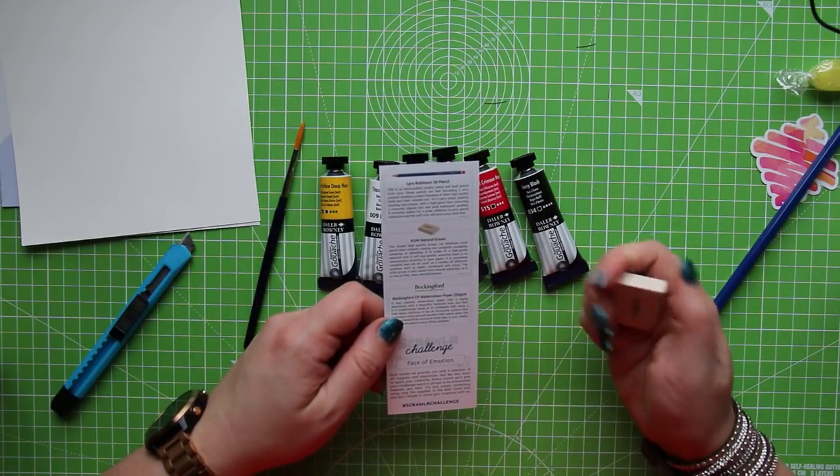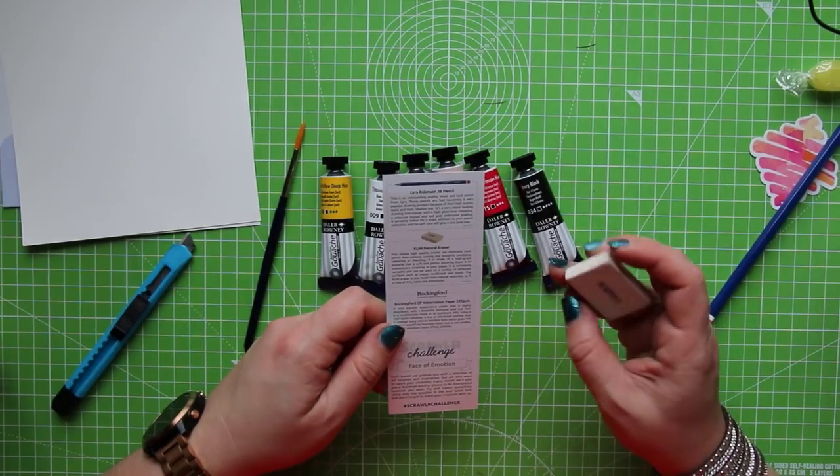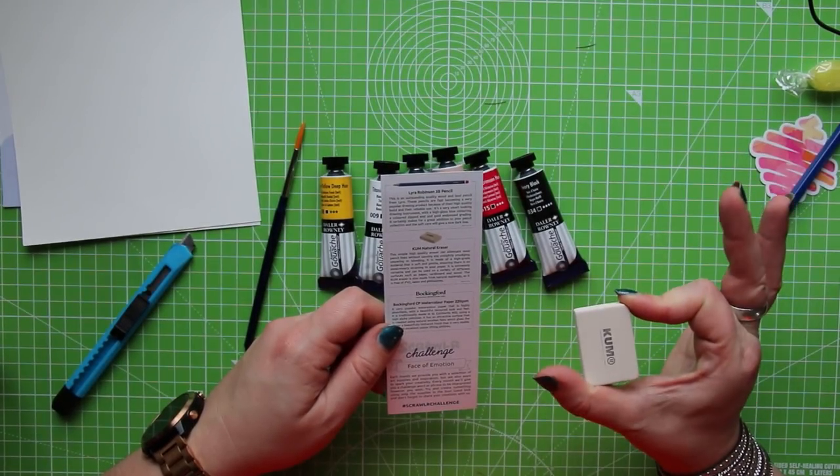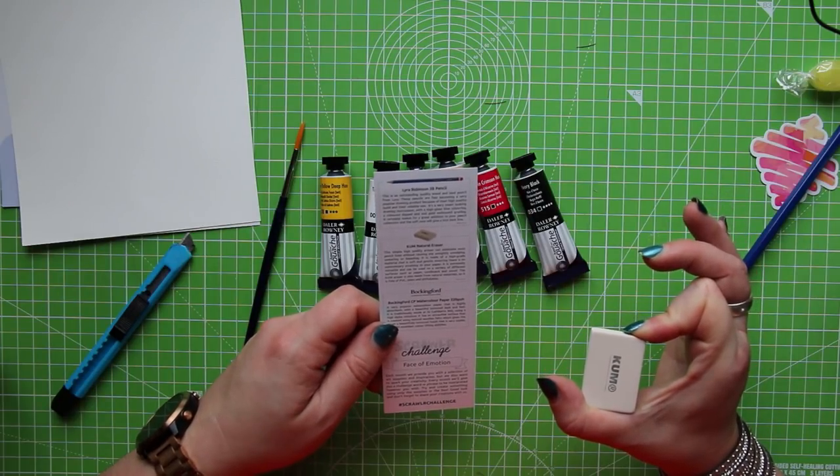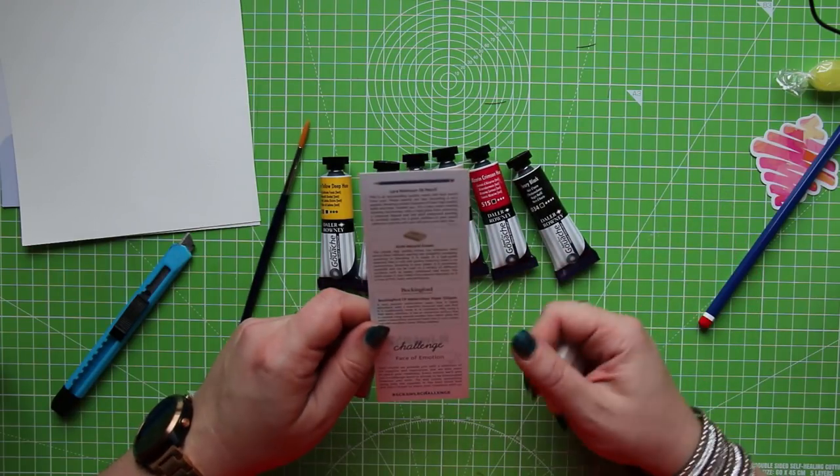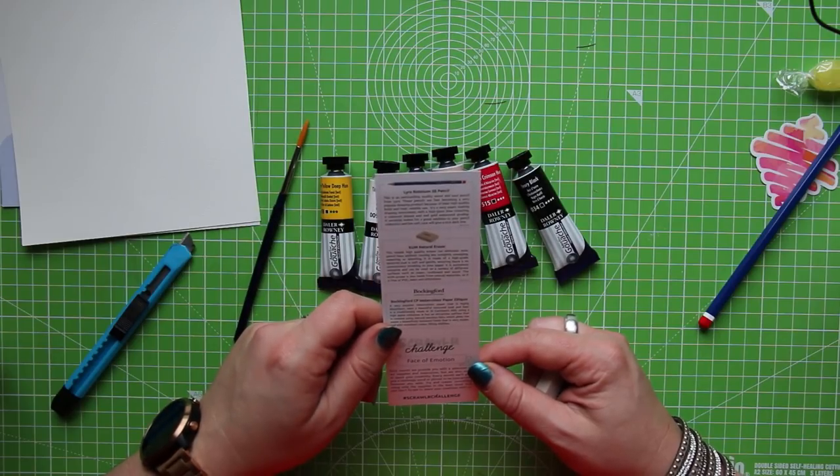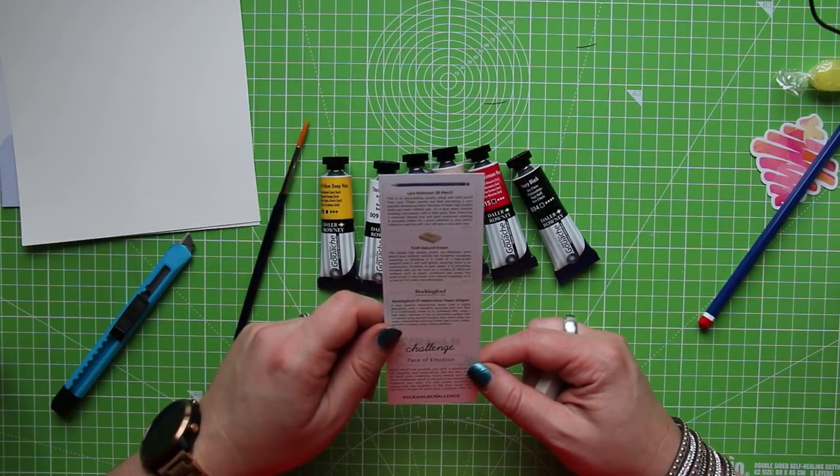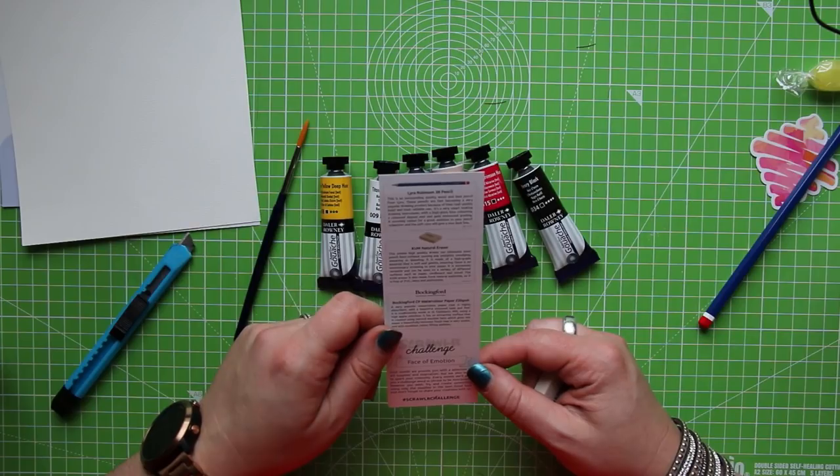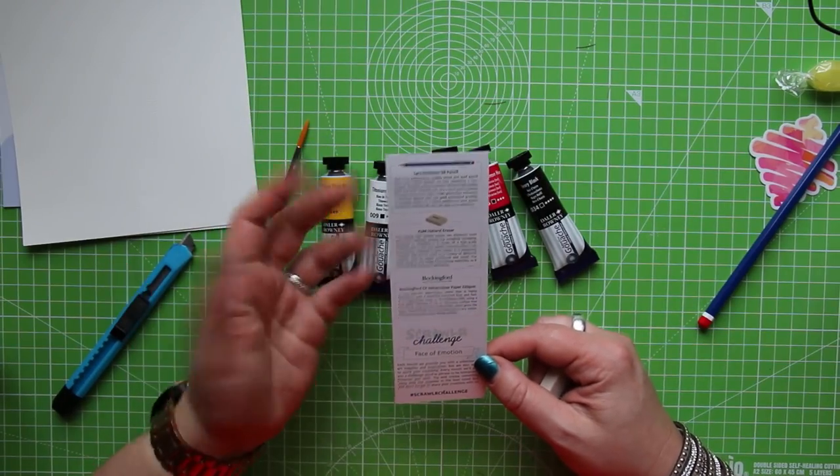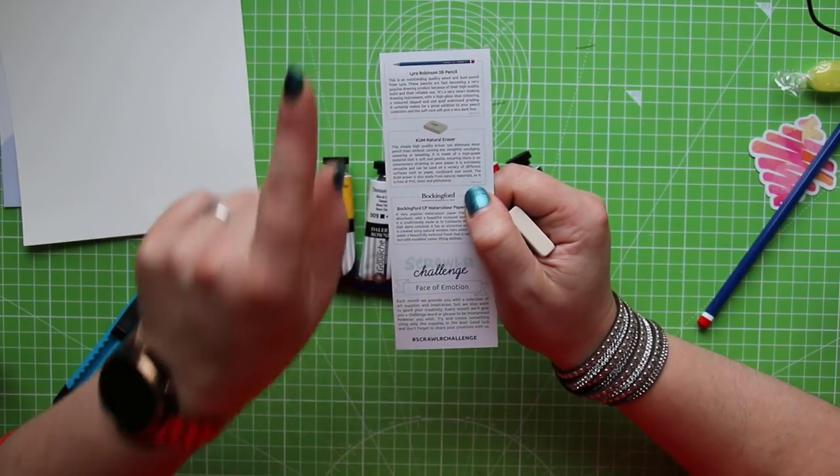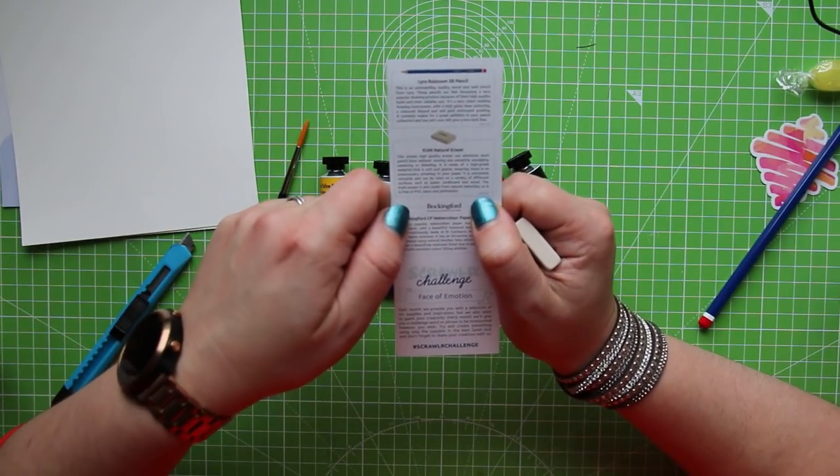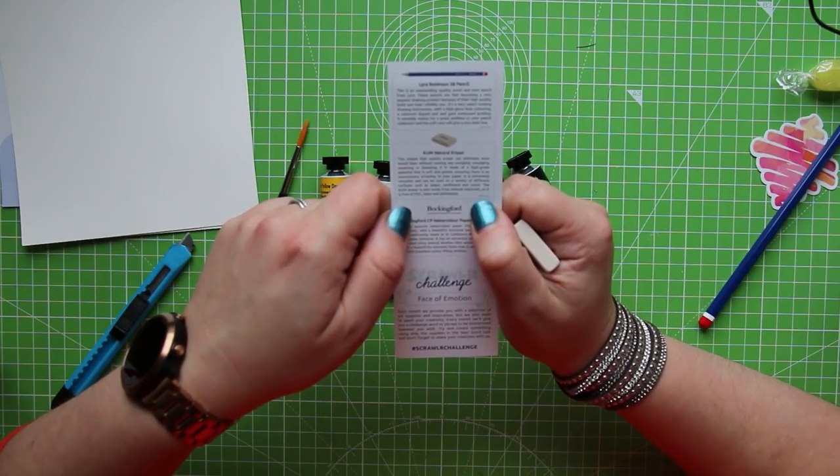Okay, the eraser is a natural eraser. High-grade material that they don't specify. That is soft and gentle, ensuring there is no unnecessary straining to your paper. Oh my god. These get better. It's extremely versatile, and can be used on a variety of different surfaces, such as paper, cardboard, and wood. Most erasers do that, guys. The eraser is made from natural materials, but they don't actually tell you what kind of materials, but it's free of PVC, latex, and phthalates.